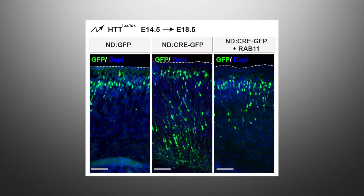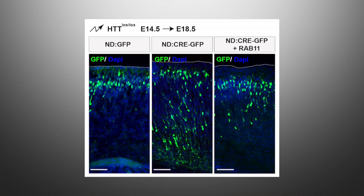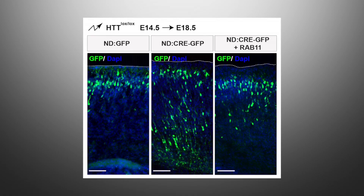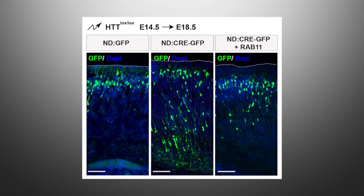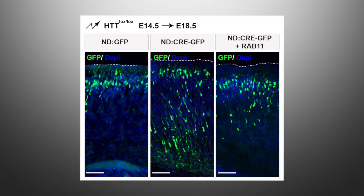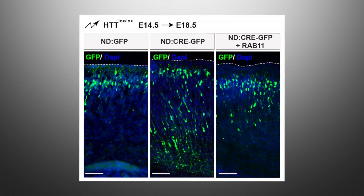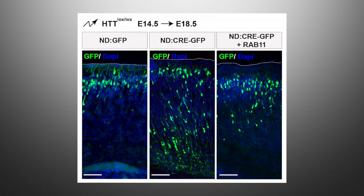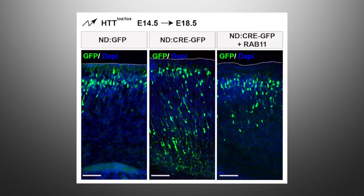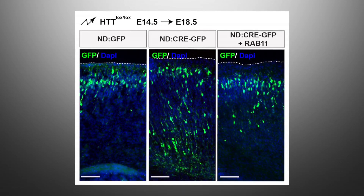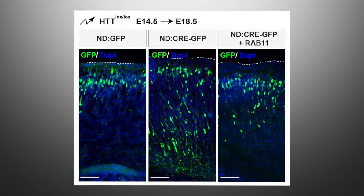To address the relevance of these findings, we focused on the migration phenotype and found that expressing Rab-11 rescues migration defects induced by loss of Huntington.